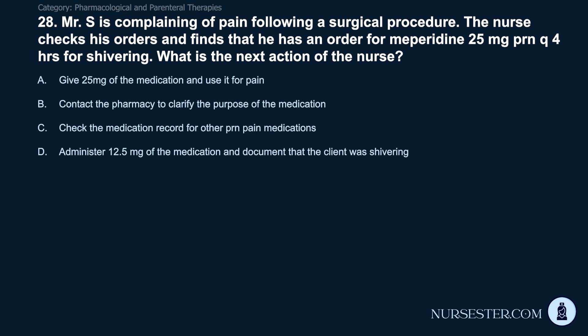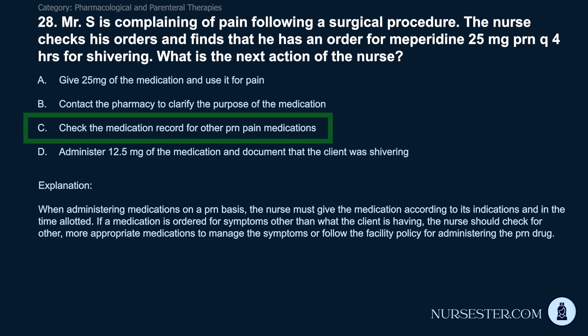Question 28: Mr. S is complaining of pain following a surgical procedure. The nurse checks his orders and finds meperidine 25mg PRN Q4 hours for shivering. What is the next action? A) Give 25mg and use it for pain. B) Contact the pharmacy to clarify the purpose. C) Check the medication record for other PRN pain medications. D) Administer 12.5mg and document that the client was shivering. Correct answer: C. Check the medication record for other PRN pain medications. When administering PRN medications, the nurse must give the medication according to its indications. If a medication is ordered for symptoms other than what the client is having, the nurse should check for other more appropriate medications or follow facility policy.